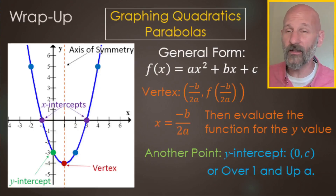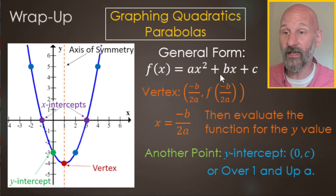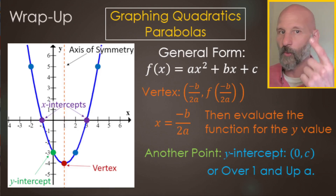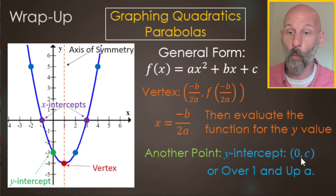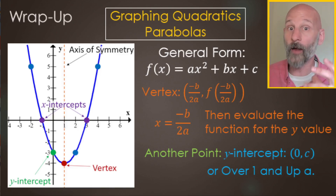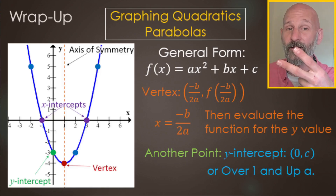To review: general form is ax² + bx + c. To find the vertex, use negative b over two times a for the x value, then evaluate the function to get the y value — that's your first point. For the second and third points, use the y-intercept (0, c), or go over one and up a from the vertex. That gives you three to four points for graphing quadratics. Hope you enjoyed the video — please leave a like!